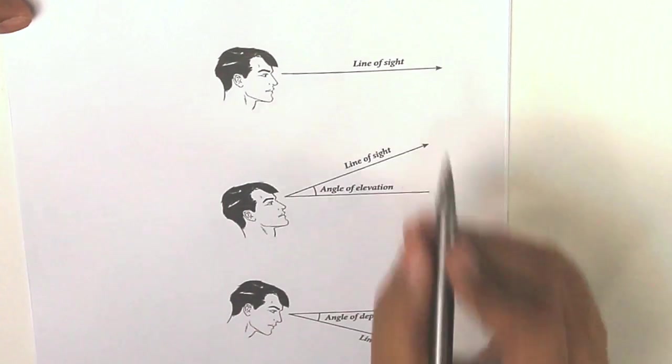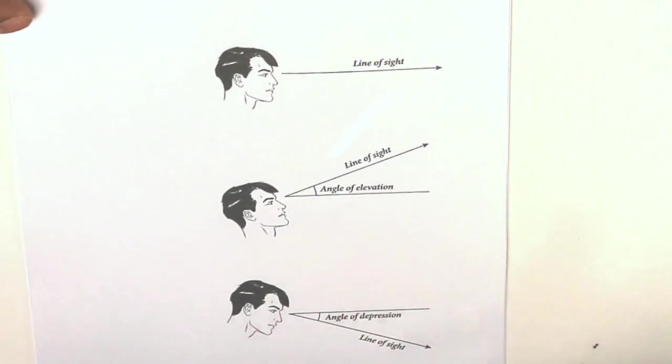Let us look at the next concept. There are three basic definitions which you should be very fluent with. The first one is line of sight. So what's line of sight? It's the direction in which you're looking at something. That's your line of sight.